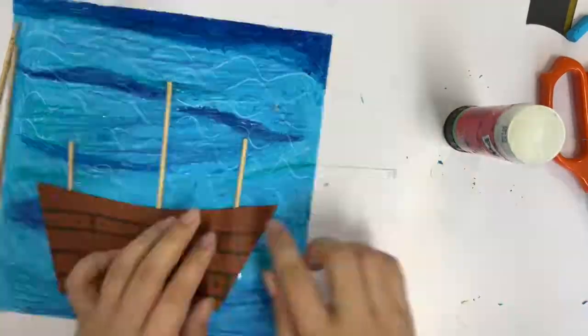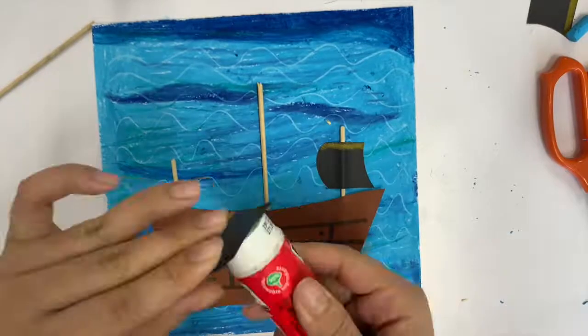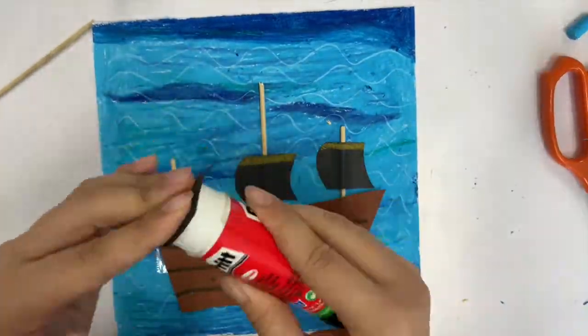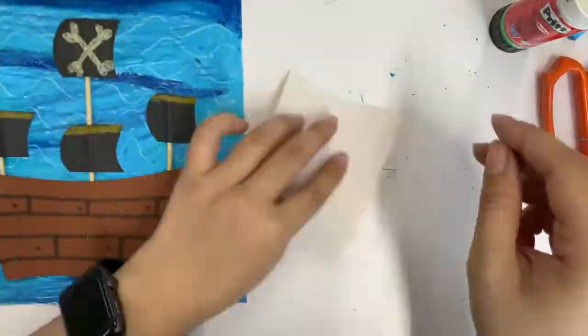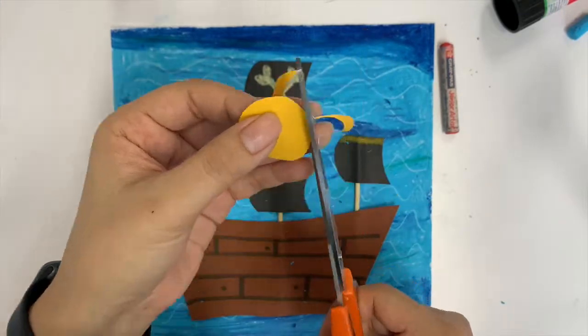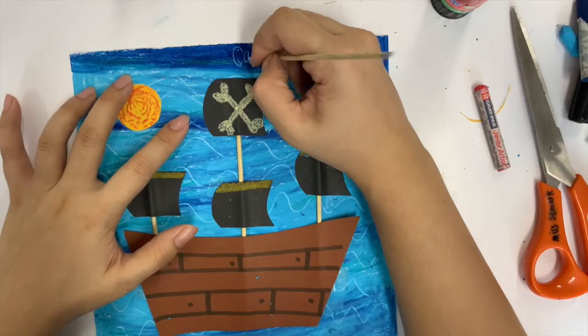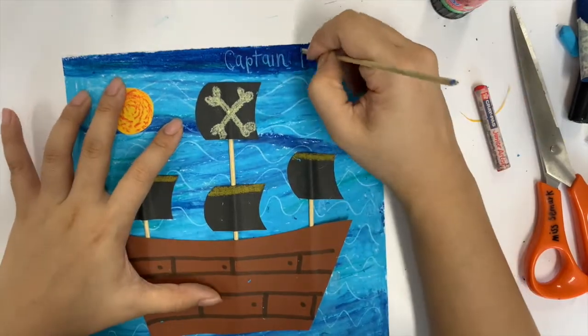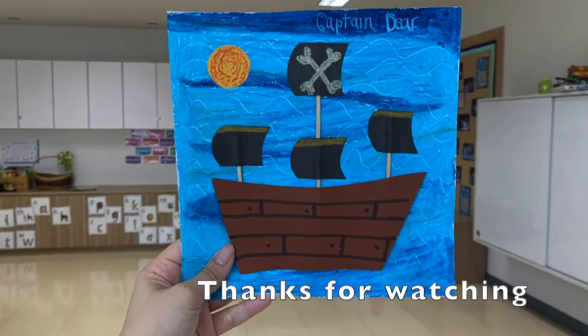Then for this part, use your glue to stick on all the decorations. You can add the moon or the sun or fish or anything that you want. Then write your name. That's it!